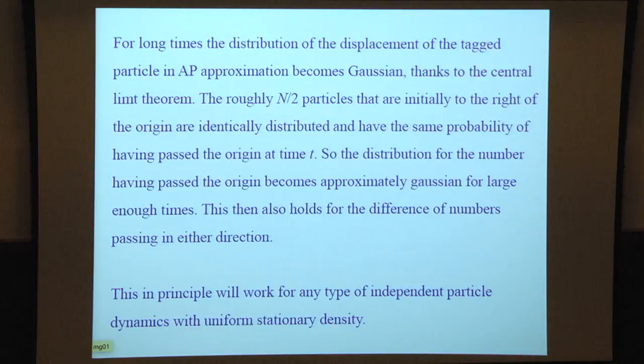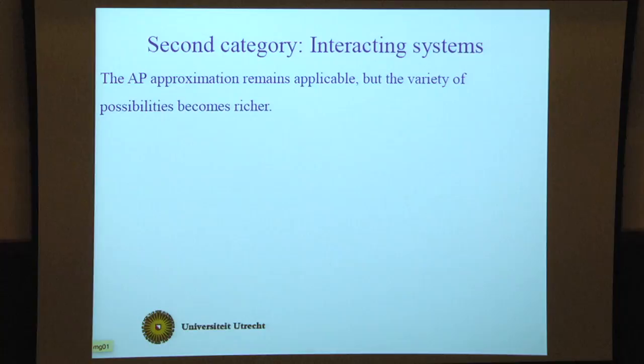For long times, the distribution of the displacement of a tagged particle in Alexander-Pincus approximation becomes Gaussian, thanks to the central limit theorem. Roughly n/2 particles initially to the right of the origin have the same probability of having passed the origin at time t. The distribution for the number having passed becomes approximately Gaussian for large enough times. This was proved first by Arratia, and it will work for any type of independent particle dynamics with uniform stationary density.